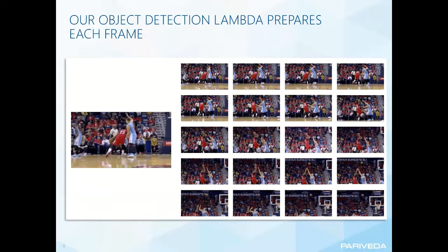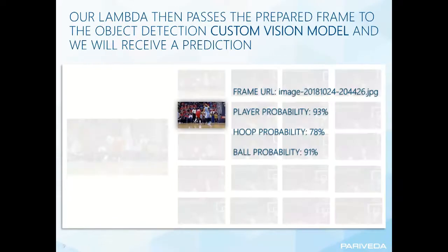From there, our Lambda passes the prepared frame to the object detection Custom Vision model, and we receive a prediction. It will isolate a frame, pass it into the model, and this is the output we get: the probability that there's a player in the frame, the probability that there's a hoop in the frame, and the probability that there's a ball in the frame.